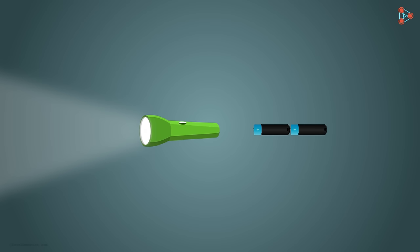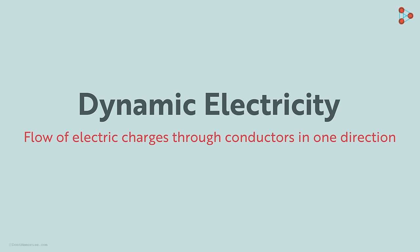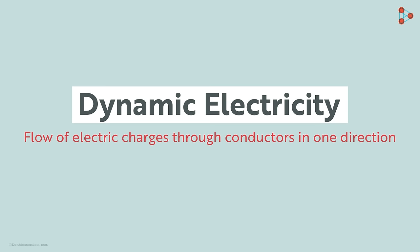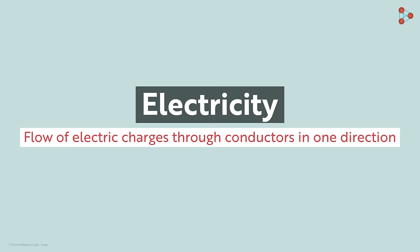So to sum it all up, dynamic electricity is flow of electric charges through conductors like say a copper wire. Generally, when we talk about electricity or electric current, we mean dynamic electricity. Hence we simply say that electricity is nothing but the flow of electric charges through a conductor.